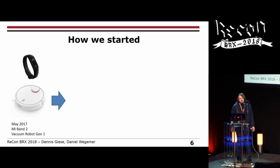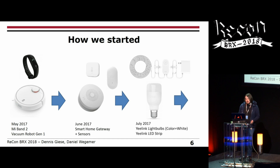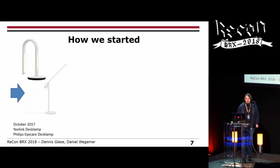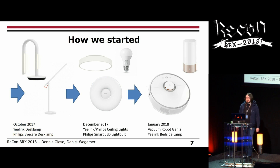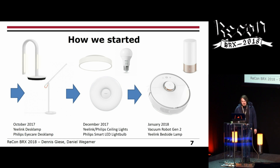How we started: in May 2017, we first looked at the vacuum cleaning robot generation 1 and the Mi Band. Then we continued to the smart home gateway and sensors. In July we had a look at the light bulbs and LED strips. We continued in October with desk lamps, in December with ceiling lights and the Philips smart light bulb, and in early 2018 with the generation 2 vacuum cleaner and some bedside lamps.